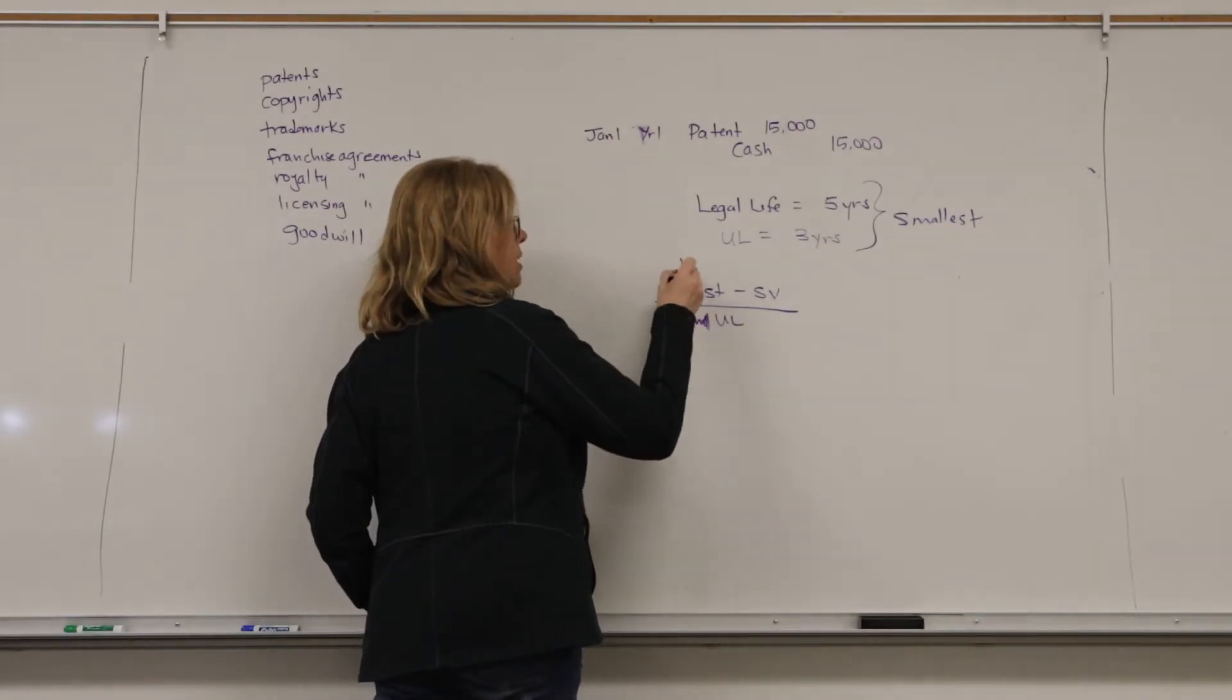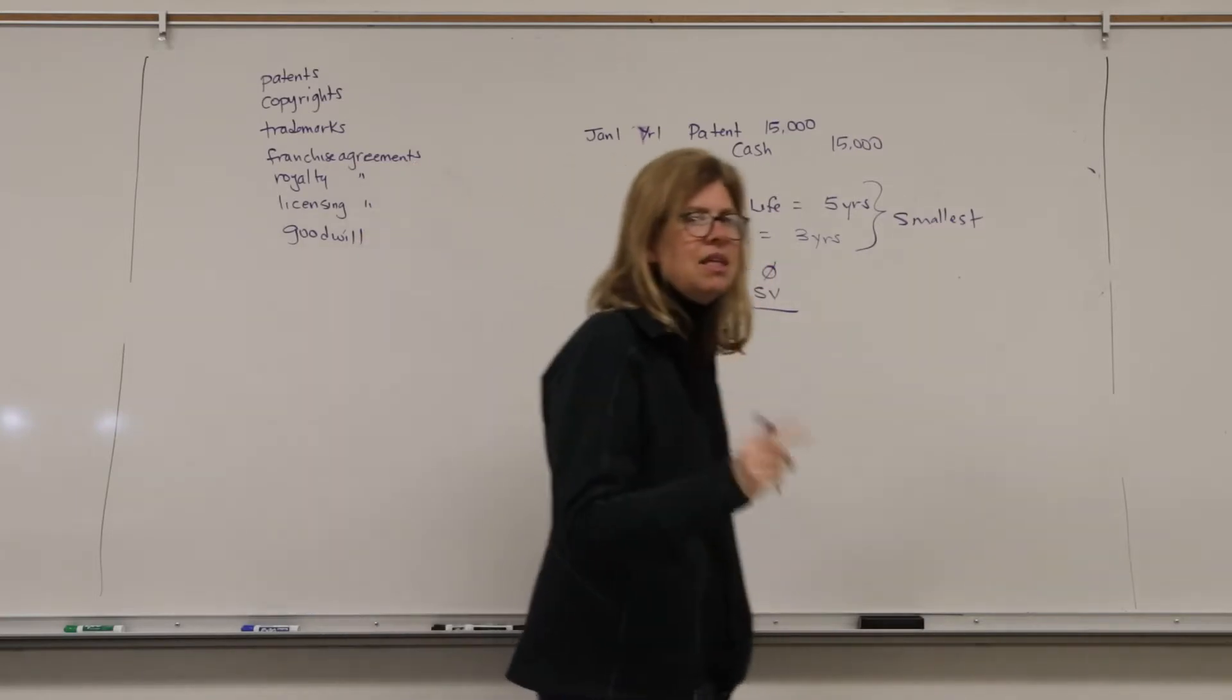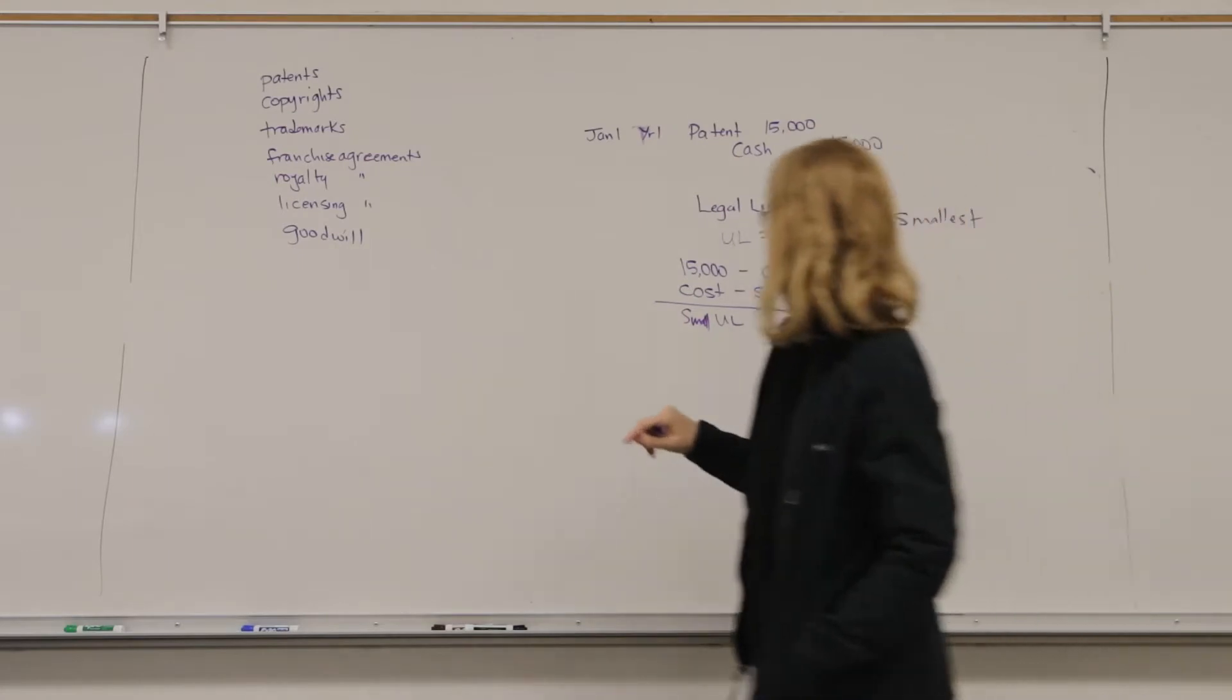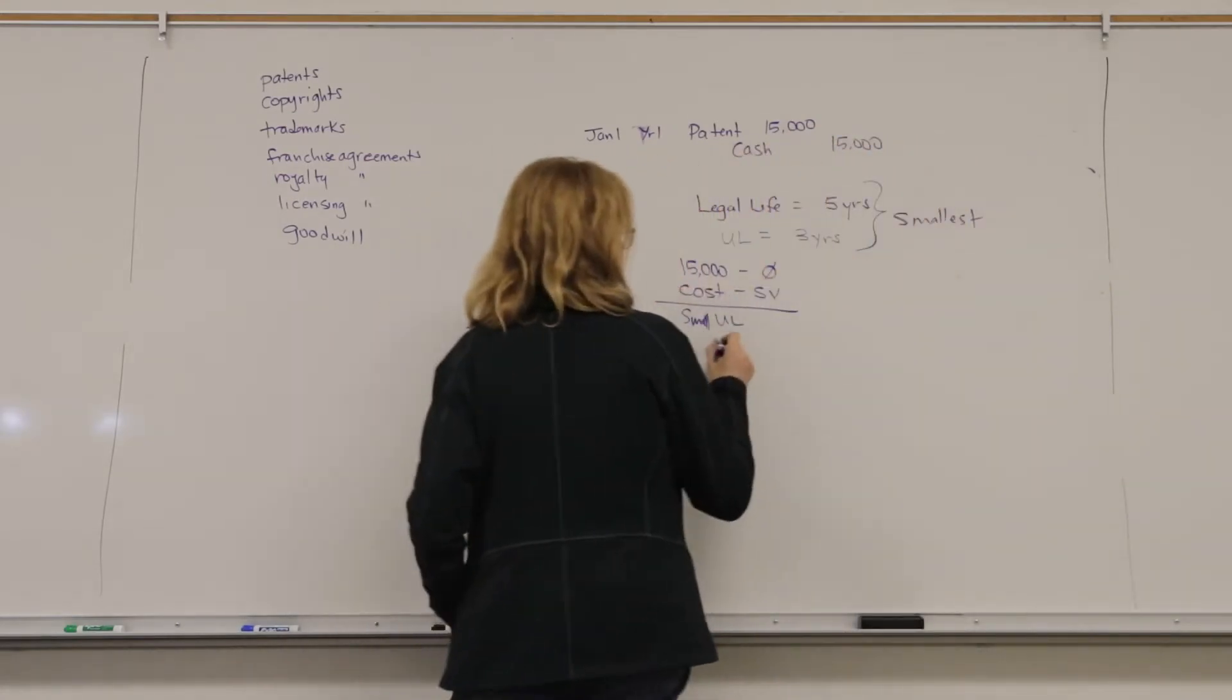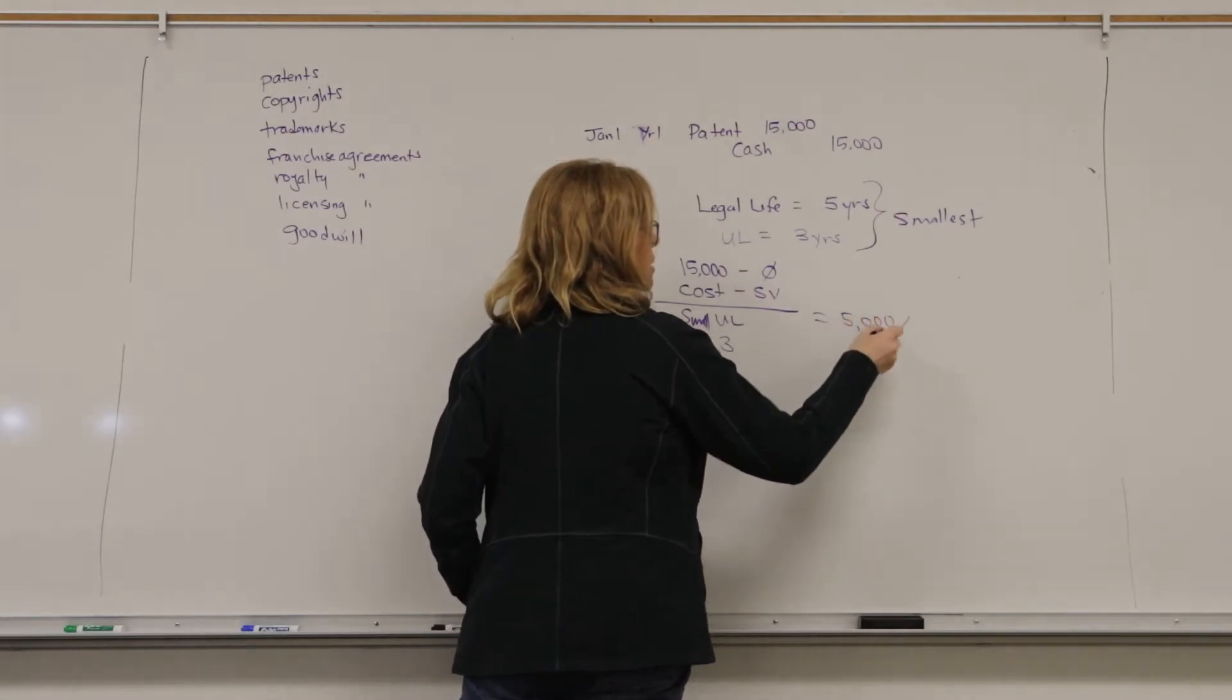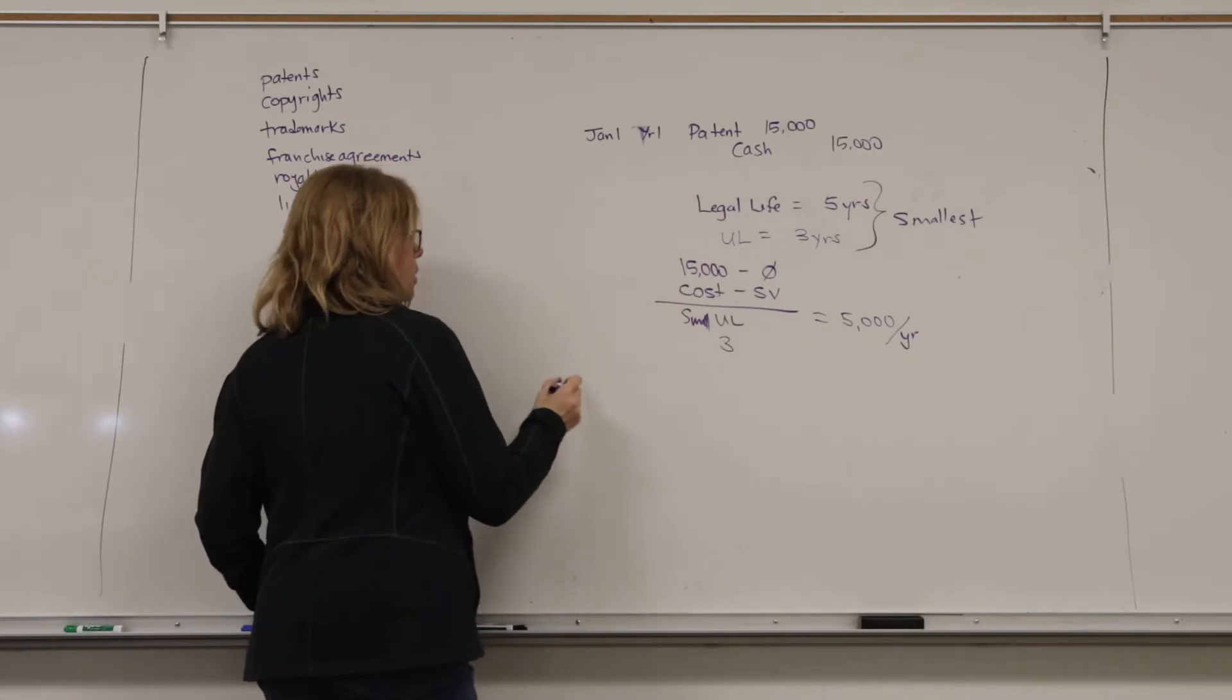In this case, we will use three years to be the useful life. Amortization is straight line. So, when I go to amortize this, I will take cost minus salvage value, although a lot of times intangibles don't have a salvage value, over the smallest useful life, the small one, whichever one that might be. So, this cost $15,000. Let's assume it has no salvage value. In fact, if I don't give you a salvage value, you assume that there is none. And then we're going to use a three-year useful life, and I'm going to amortize this patent $5,000 a year.